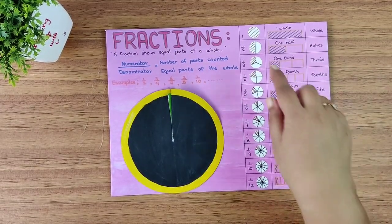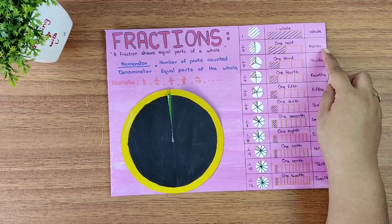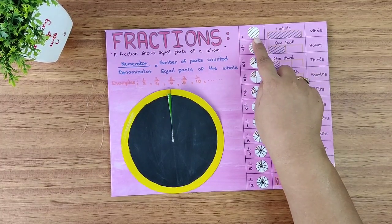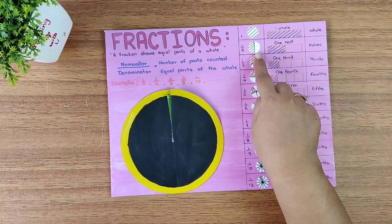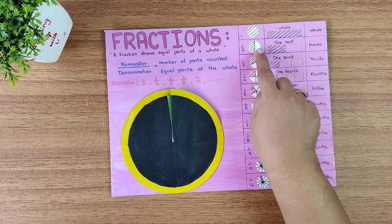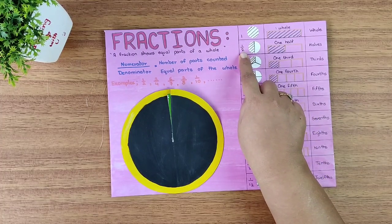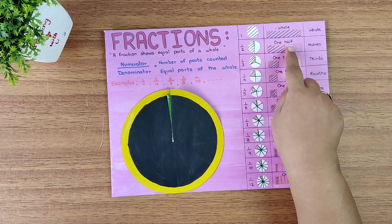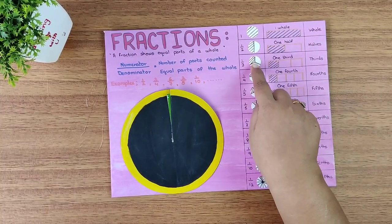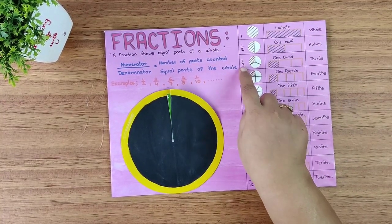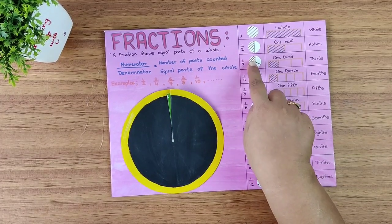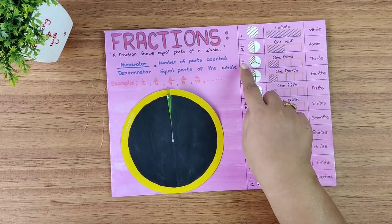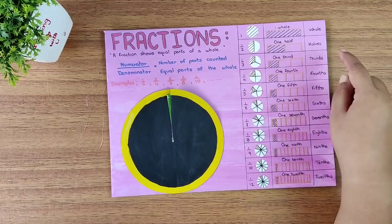In this table I have denoted the fraction and the plural of it. Starting with one whole, where I have shaded the circle and the fraction bar. Then coming to one half, where we divide the circle into two equal parts since two is in the denominator, and we take one part — the plural of half is halves. Then one third, where we divide the circle into three parts and shade one — the plural of third is thirds.